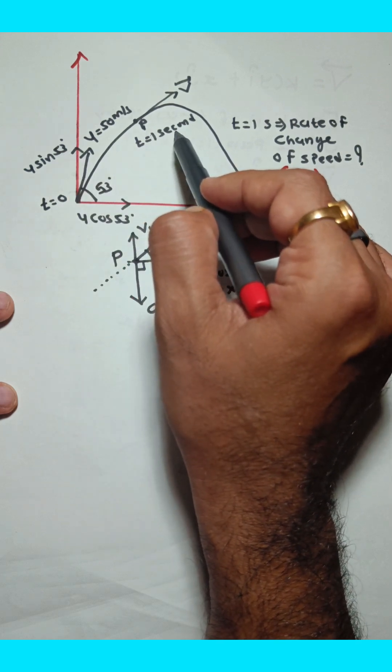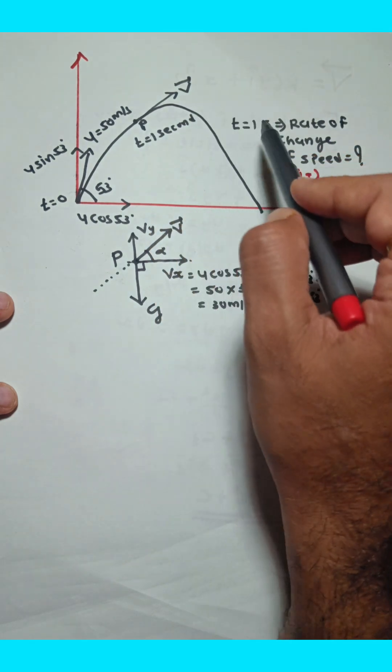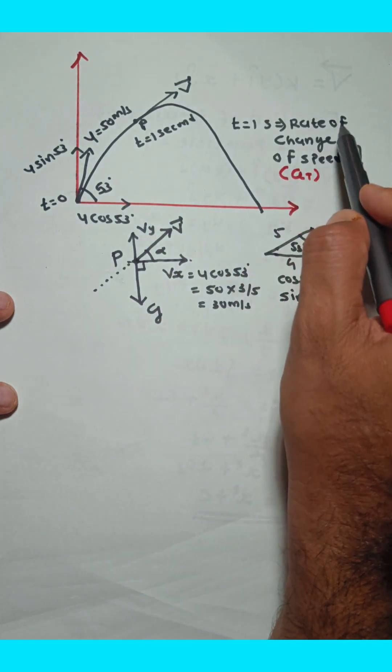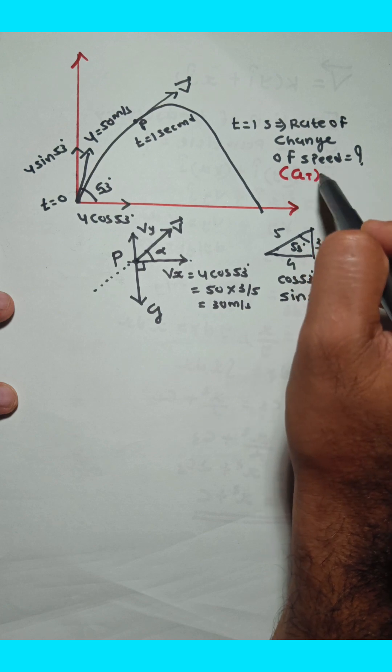At t equals 1 second, suppose velocity is v vector. Find out the rate of change of speed, which means tangential acceleration.